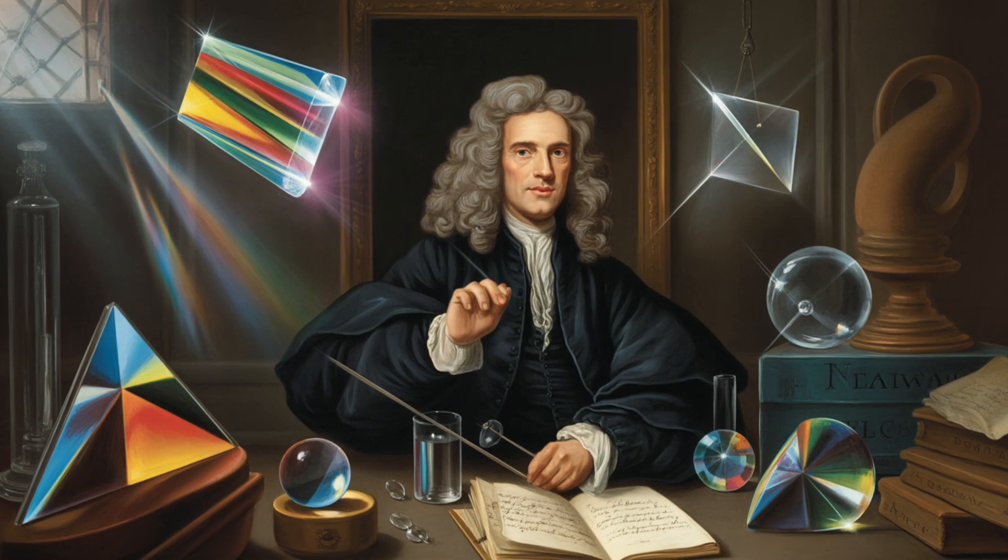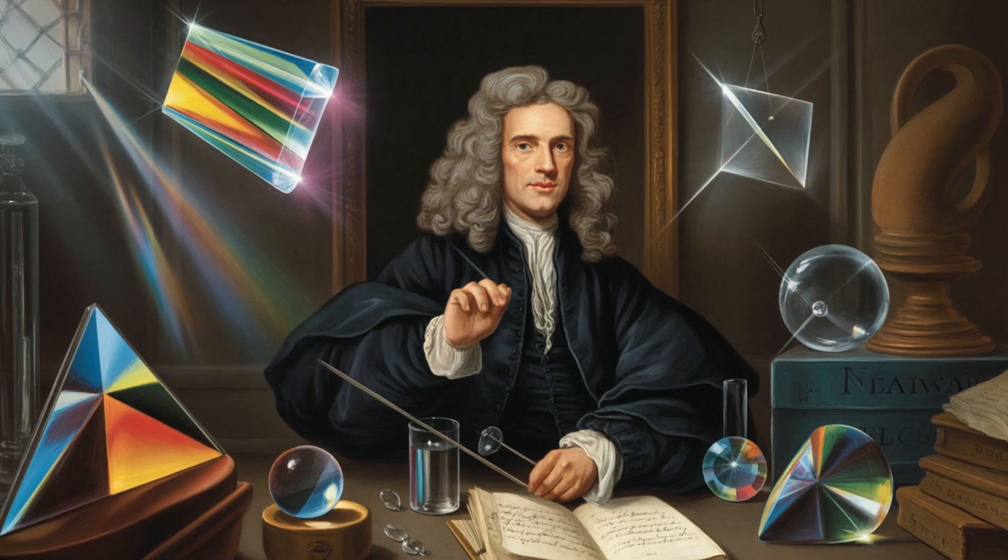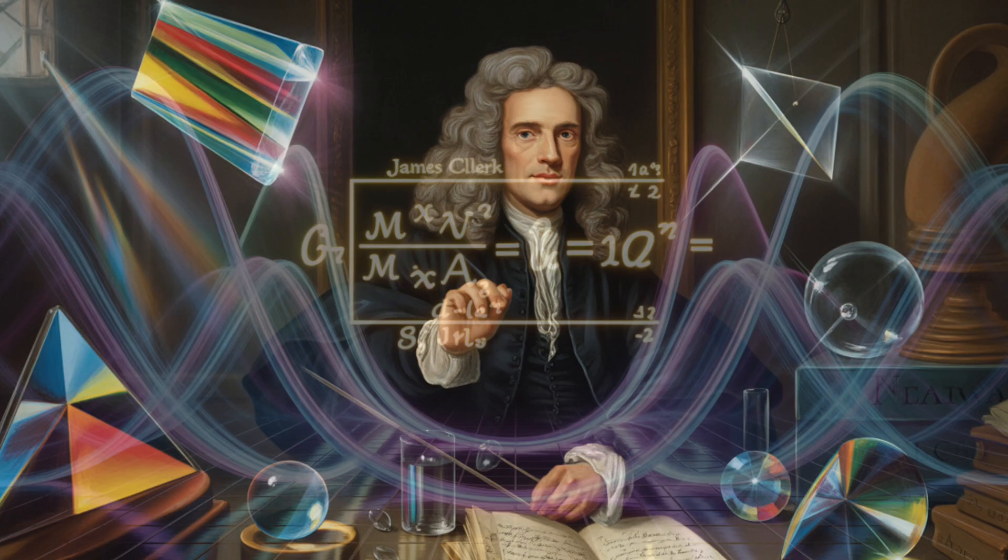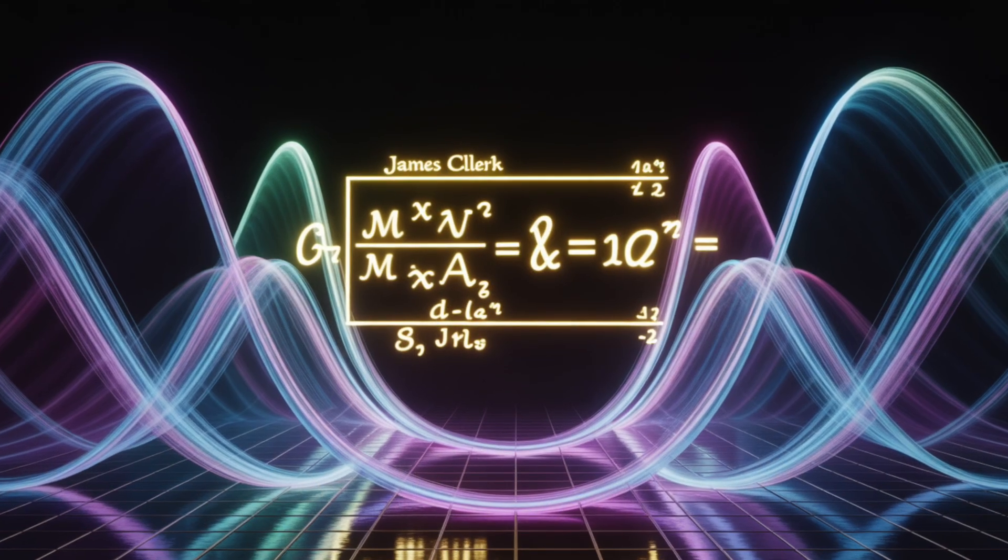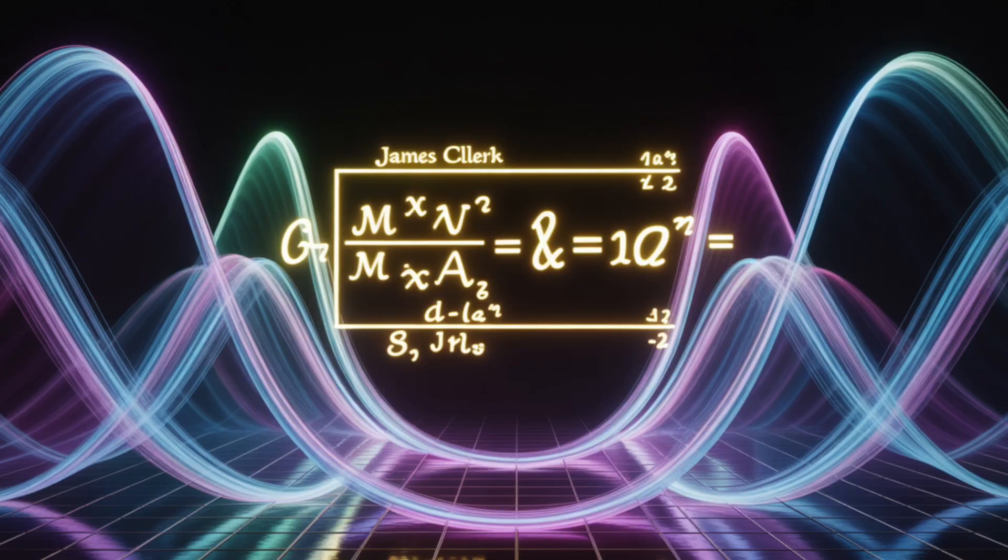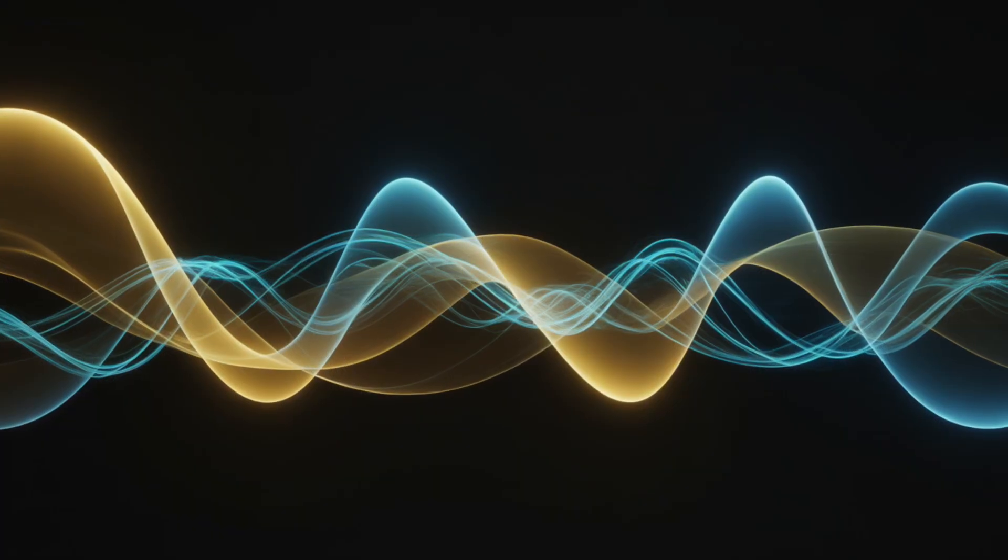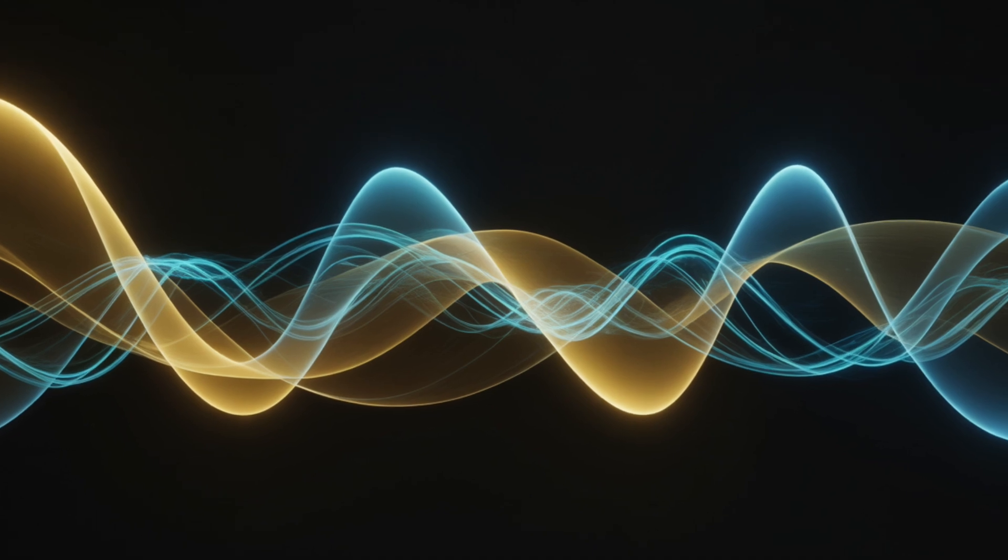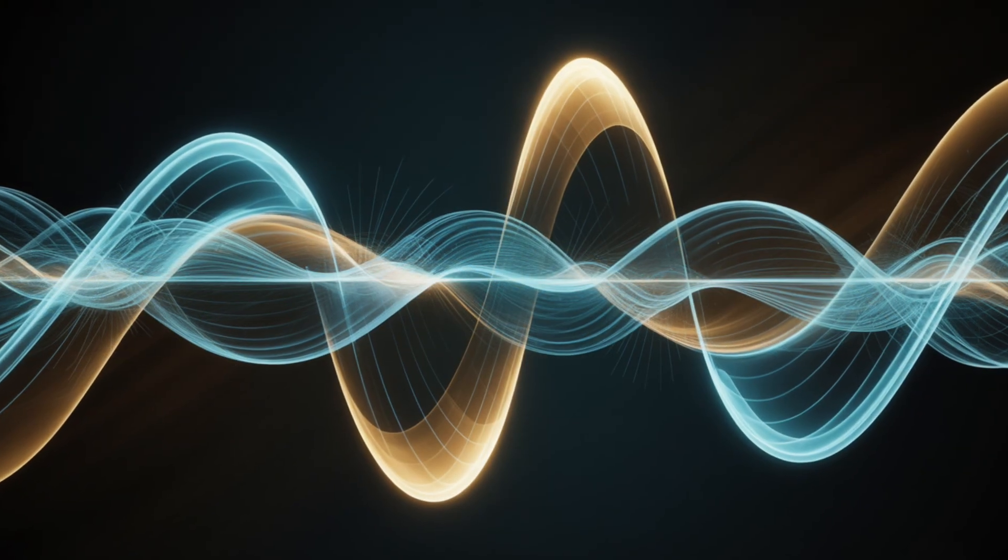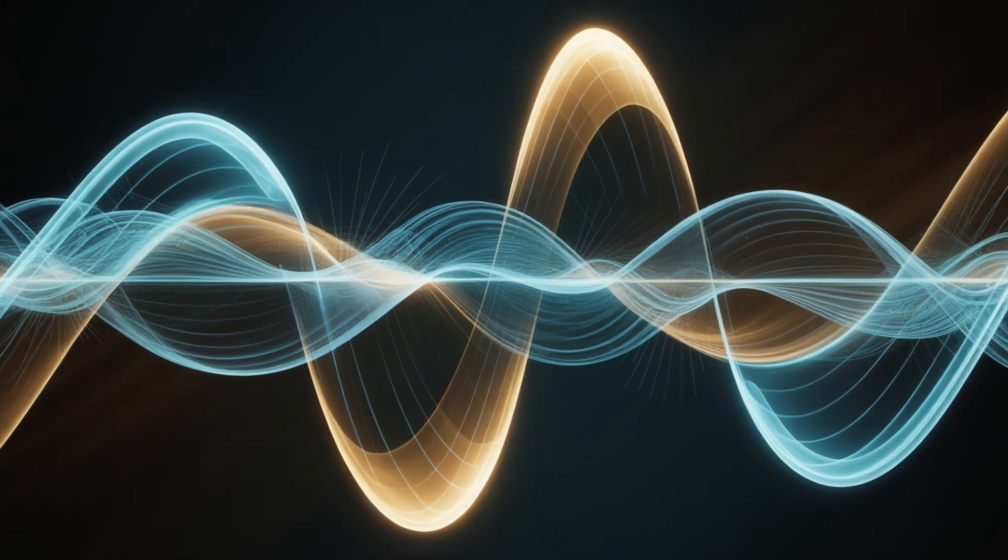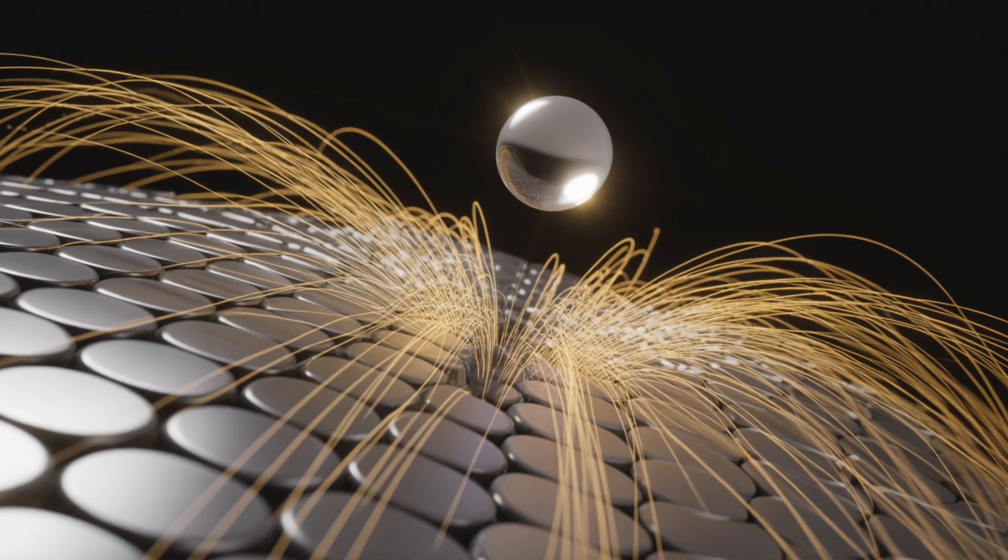For centuries, light was a puzzle. Isaac Newton described it as a stream of particles, corpuscles he called them. Then, in the 1800s, James Clerk Maxwell unified electricity and magnetism, proving that light was an electromagnetic wave, oscillating fields traveling through space. The world celebrated. The nature of light, it seemed, was finally understood. But nature had one more trick to reveal.